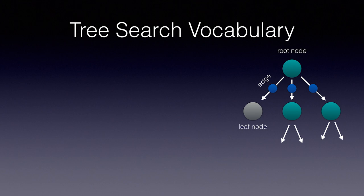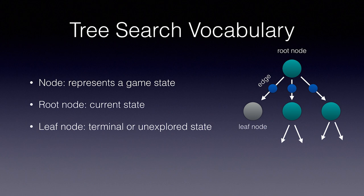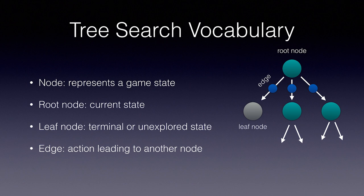In order to understand Monte Carlo Tree Search, there are a few basic terms you should be clear about. This works the same way as a classic tree search — the only difference is we intelligently choose which branches to expand. A node represents a game state. The root node would be the current state of the game we are in now. A leaf node is a terminal state or a completely unexplored state that we haven't recorded any data on yet. An edge represents a possible action leading to another node, also called a branch. Each node has a potential branch for every legal move possible in that state.